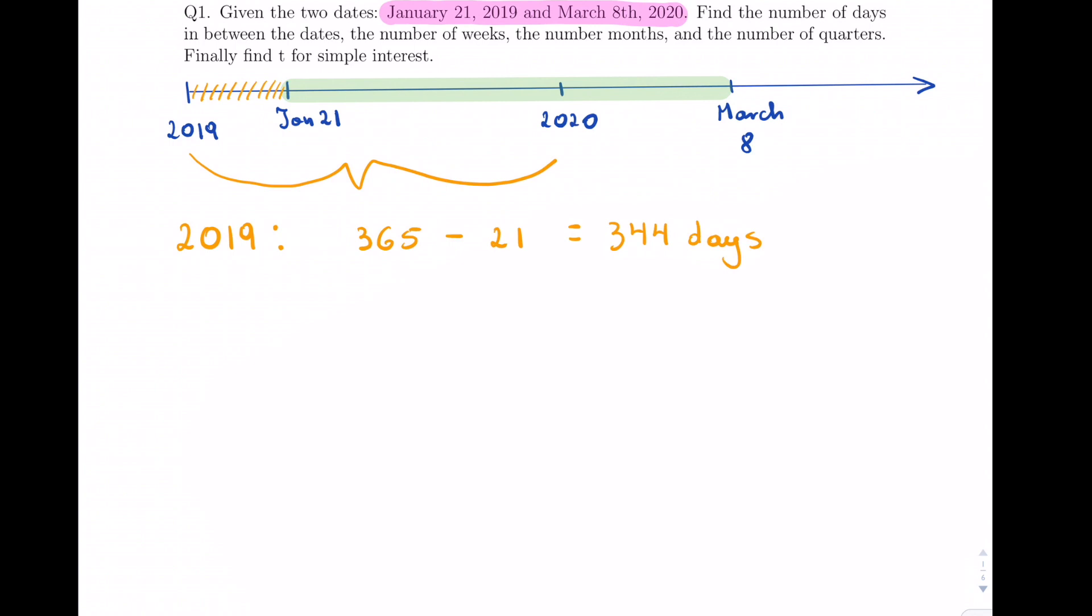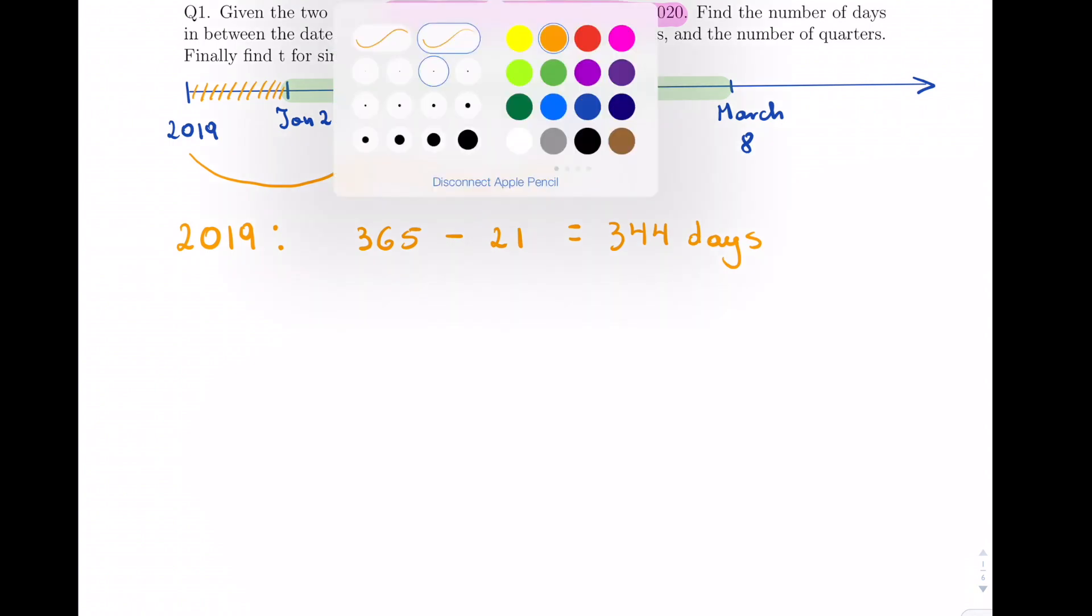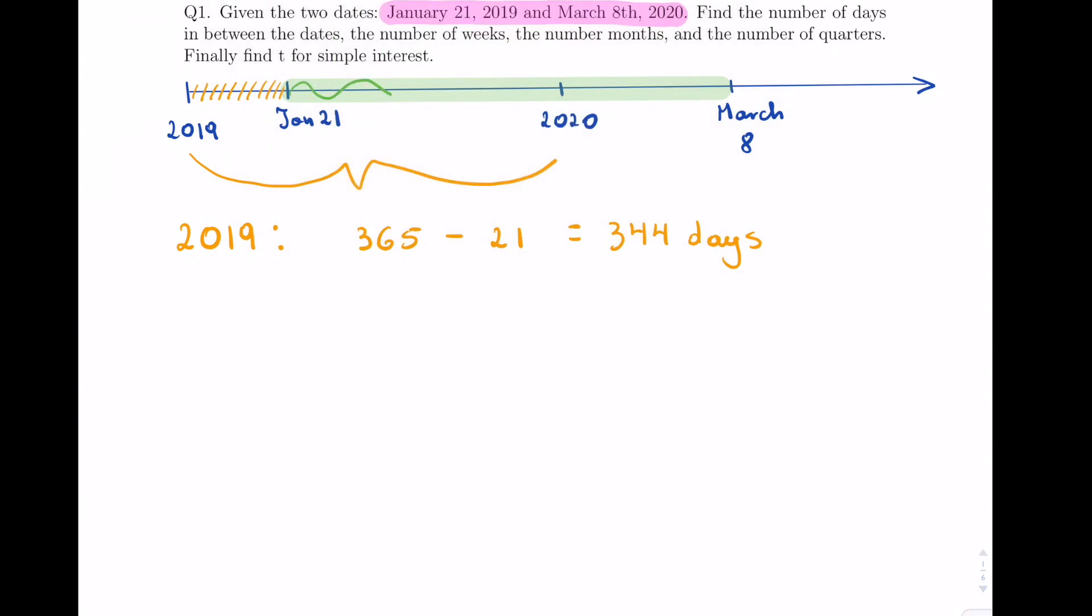We've taken care of this area. Now we need to find out the next area, which is in 2020. What day in the year is March 8th? 2020 is a leap year.